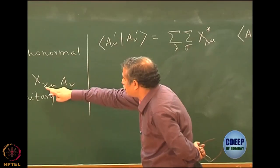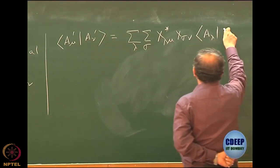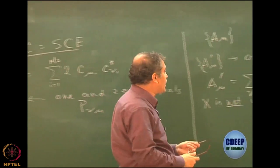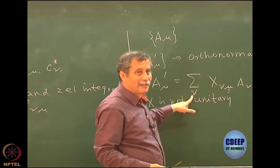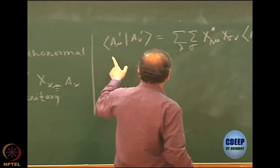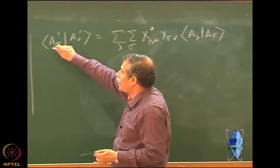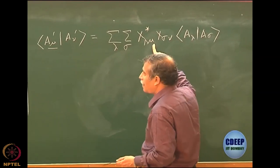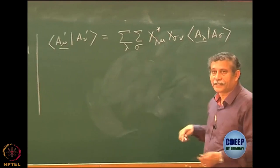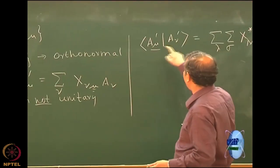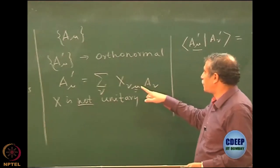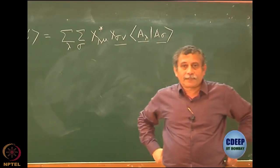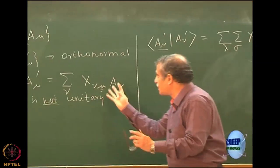Expanding A_μ prime using dummy index lambda gives X_λμ star times A_λ, and expanding A_ν prime using dummy index sigma gives X_σν times A_σ. So the overlap becomes a sum involving X_λμ star, the overlap of A_λ and A_σ, and X_σν. Note these are just numbers under the summation over lambda and sigma, so we can rearrange them freely.